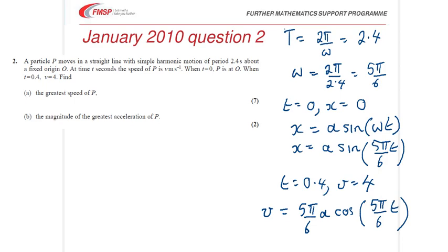Now, we can use that, because we know t is 0.4 gives v is 4, we can use that to find the amplitude. So, let's put things in. Over on the side here, 4 equals 5π over 6 times a, times cos of, what will we have when t is 0.4? You get the cos of 2π over 6, in other words, π over 3.